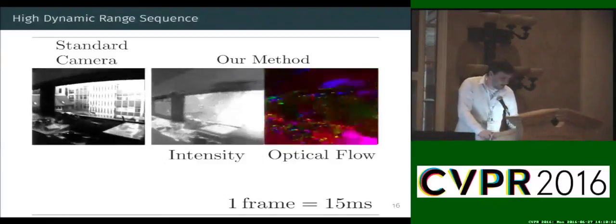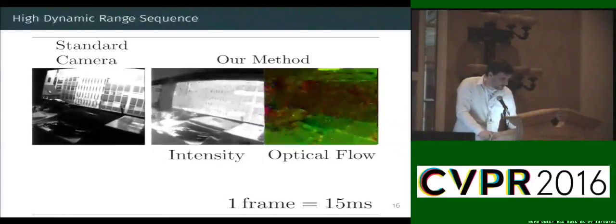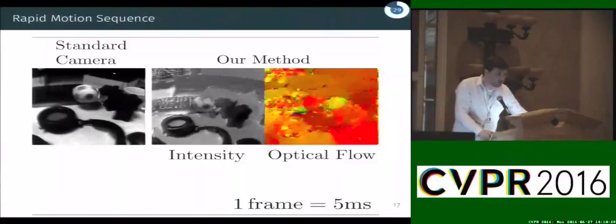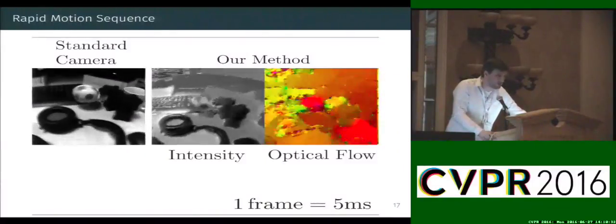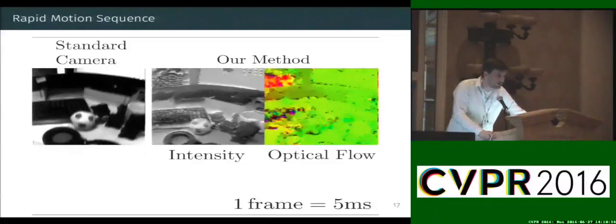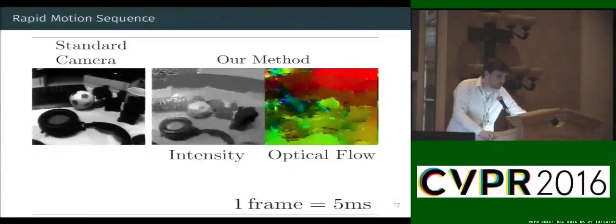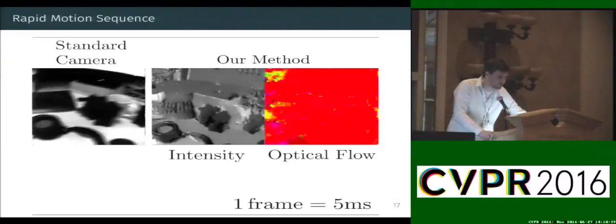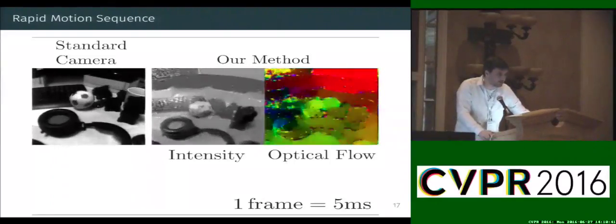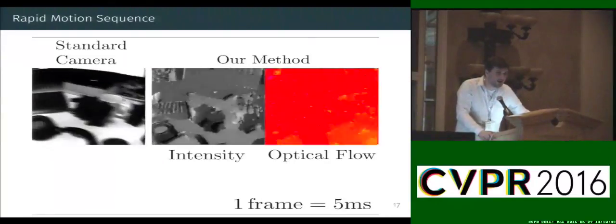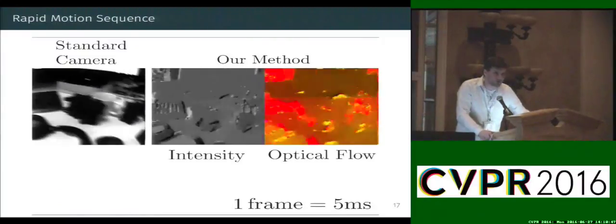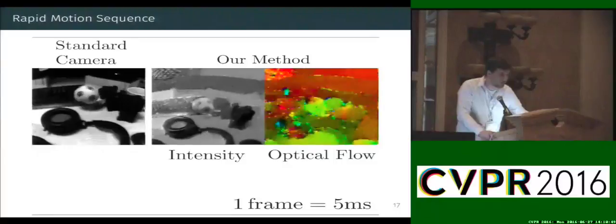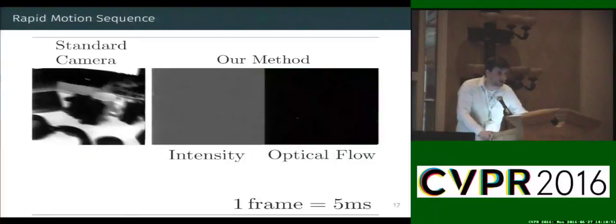So the next example we show the capabilities of understanding rapid motion with the event camera. Here we throw a ball onto a desk and with this 30 hertz standard camera you see a very jittery motion of the ball. While in our reconstruction results we see a very smooth trajectory and see even the spinning motion of the ball. This is thanks that our approach essentially allows us to choose a frame rate afterwards, which is at this case 200 frames per second.